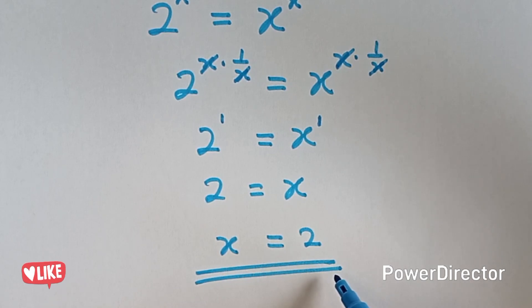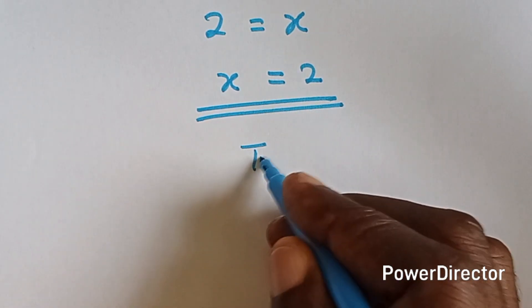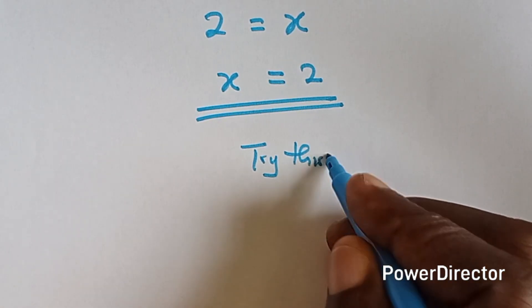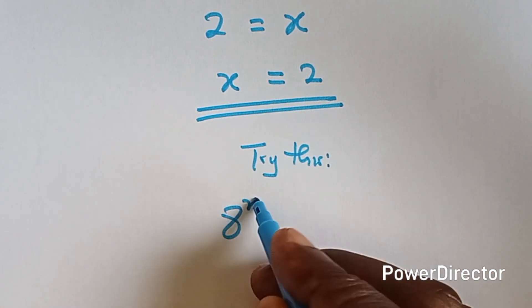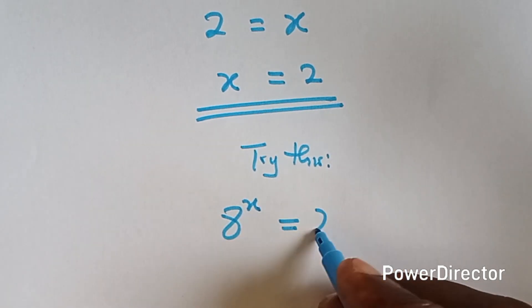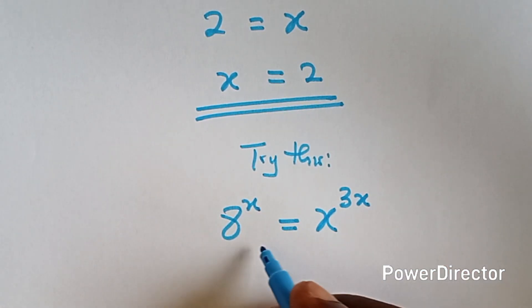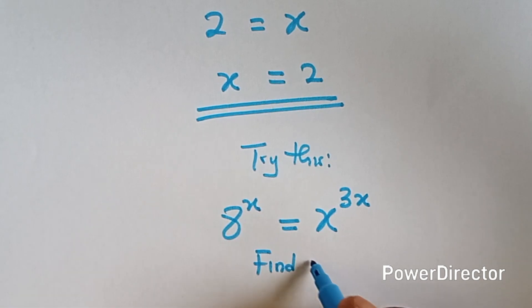All right, so that shows the easiest way to solve for x. Now let's try something similar to that. Let's solve this: we have 8 raised to power x equals to x raised to power 3x. All right, so let's find x.